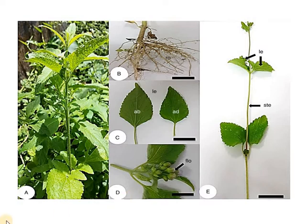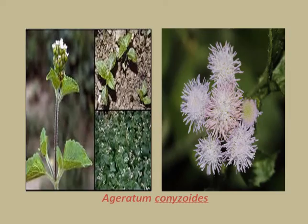Ageratum conyzoides is an erect, branching, soft, slightly aromatic annual herb with shallow fibrous roots. It grows up to one meter in height. The stem and leaves are covered with fine white hairs. The leaves are ovate with a broad base, up to 7.5 centimeters long.